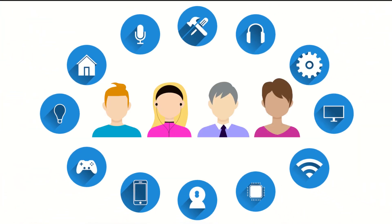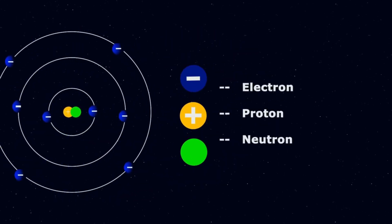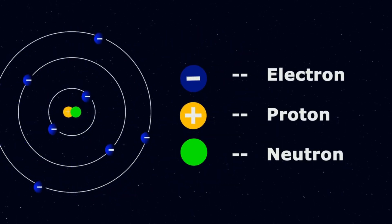Everything around us, including us, is made of matter. Matter consists of atoms, and each atom consists of protons, electrons, and neutrons.